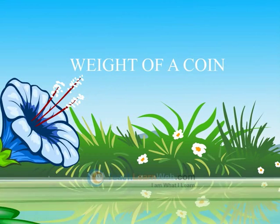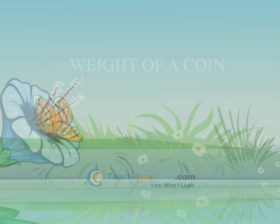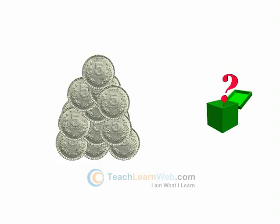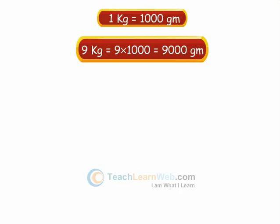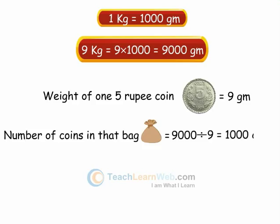Children, the weight of a five rupee coin is nine grams. There is a bag full of five rupee coins weighing nine kg — how many coins does it have? One kg is equal to one thousand grams, so nine kg is equal to nine into one thousand, which equals nine thousand grams. The weight of one five rupee coin equals nine grams, so the number of coins in that bag equals nine thousand divided by nine, which equals one thousand coins.